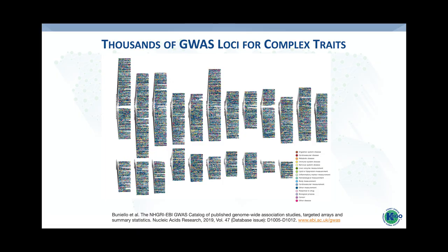The genetics of complex traits has been revolutionized by the genome-wide association studies approach, and thousands of different risk loci have been associated with many different human diseases and traits, as illustrated by this graphic taken from the NHGRI catalog. The clinical translation of these findings has been lagging behind. There are two major opportunities: drug target discovery, which I won't discuss today, and polygenic modeling.